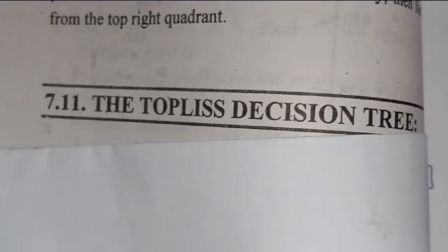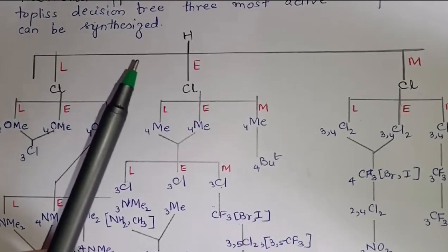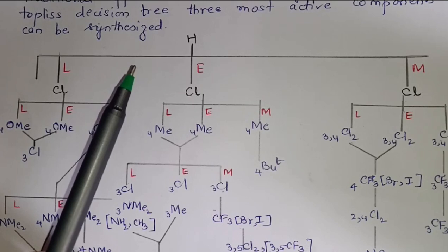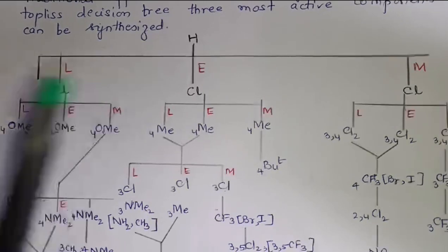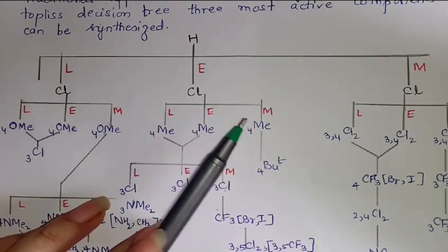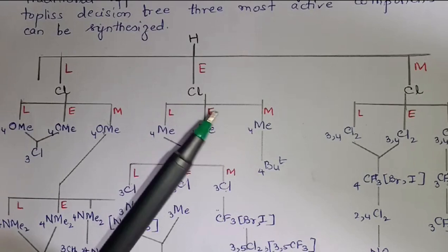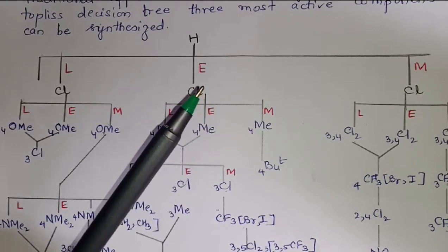Hi everyone. Today my topic is the Topliss decision tree. It is a flow diagram that in a series of steps directs the medicinal chemist to produce a series of analogues, some of which should have greater activity than the lead. It effectively reduces the number of compounds that a medicinal chemist needs to synthesize to discover potent analogues.